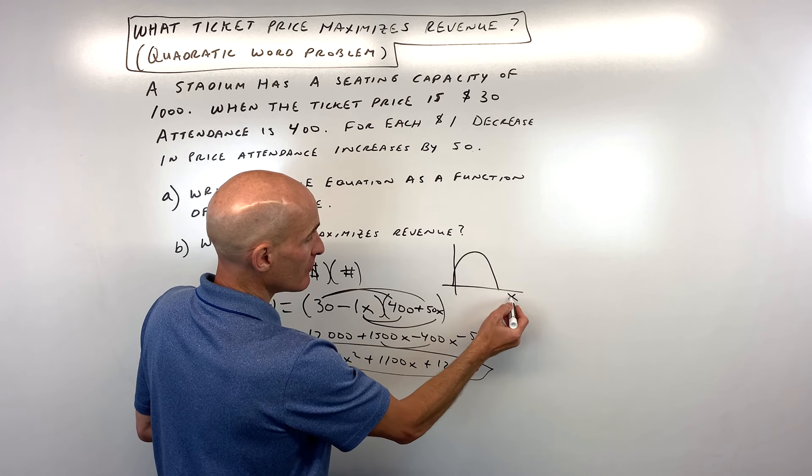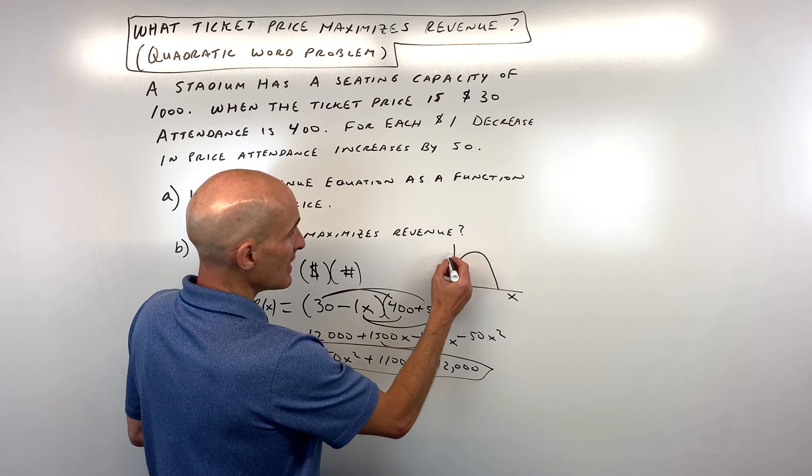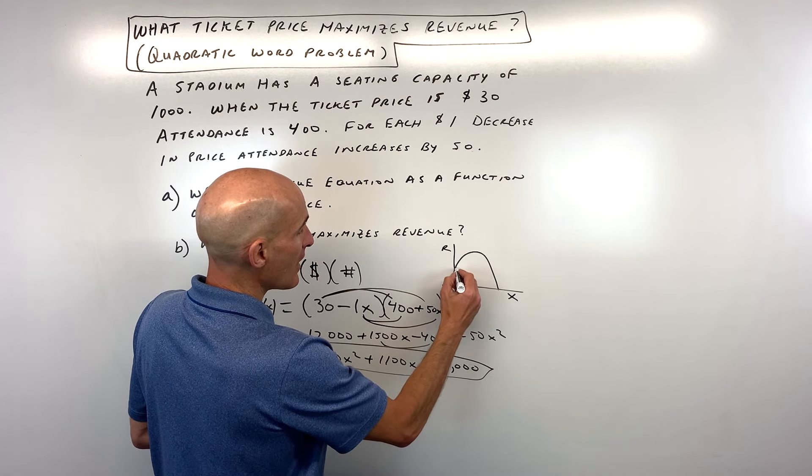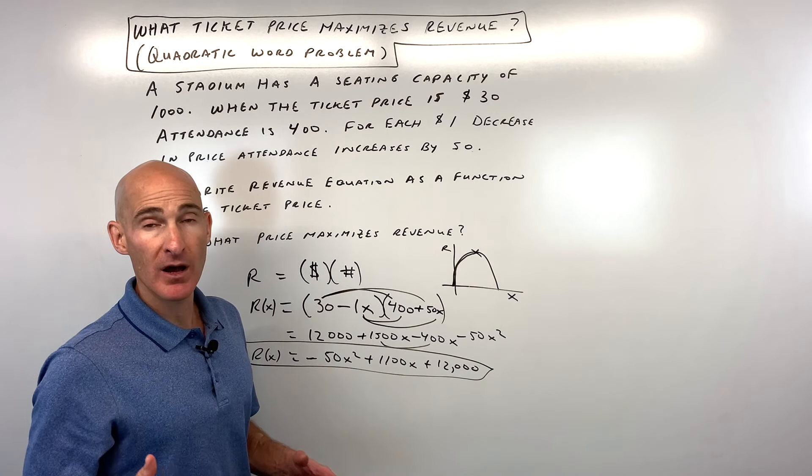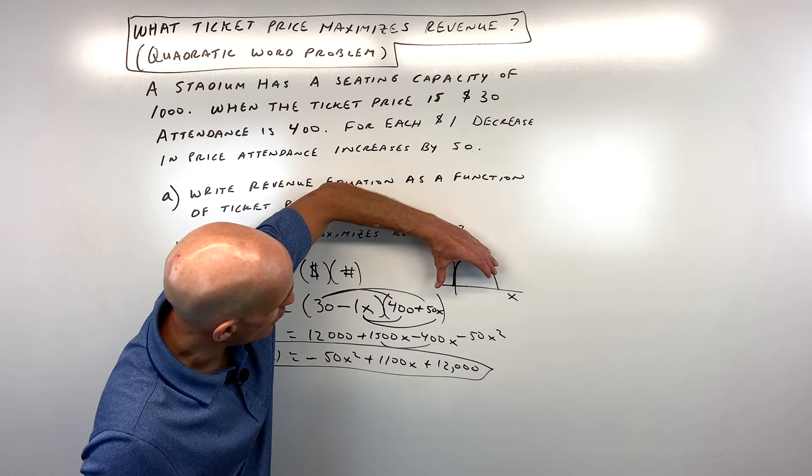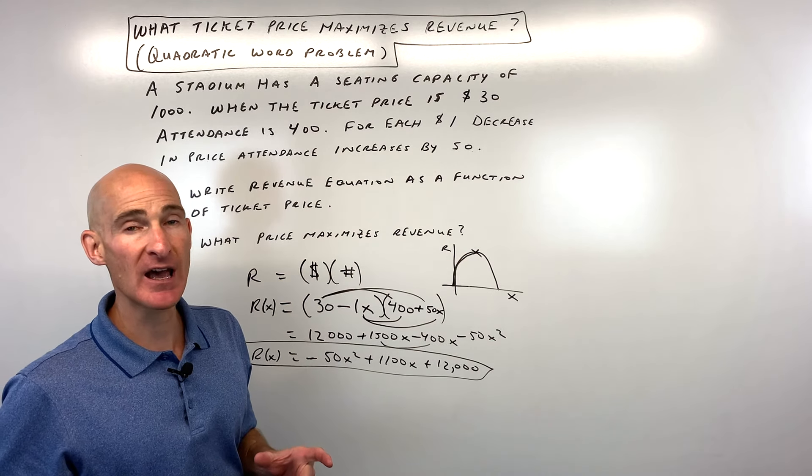So here's the number of price decreases. Here's your revenue. And we're trying to figure out this point right here where it's a maximum point. And because that a value is negative it opens down. So that maximum is going to be at that vertex.